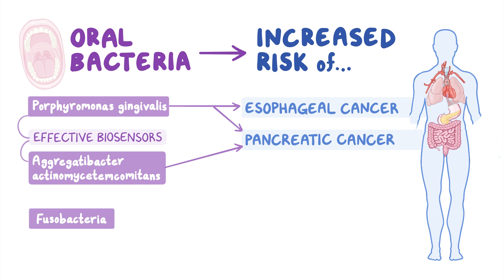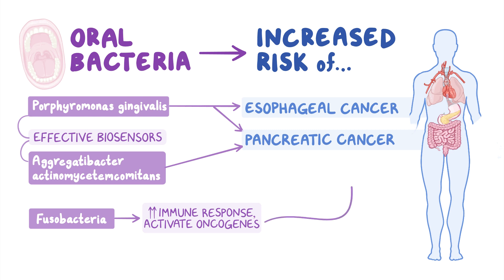Fusobacteria is another genus of bacteria in the mouth that produces excessive immune responses and activates oncogenes. They can invade the bowel and cause inflammation that accelerates colorectal tumor formation.